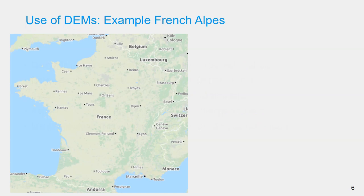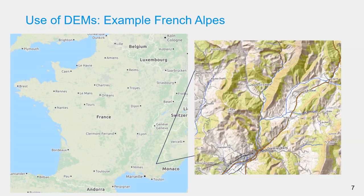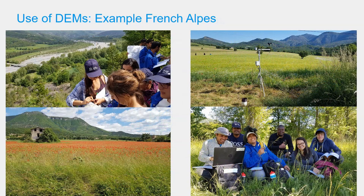I will illustrate the use of DEMs using an example from the French Alps, near Digne-les-Bains, where students from IHE Delft in the hydrology specialization do their fieldwork. During fieldwork, students study the hydrological processes in their own catchments. Prior to fieldwork it's useful to study the digital elevation models of those catchments to understand the relation between hydrology and elevation differences. A DEM can also help upon return from the field for further interpretation of the study area.